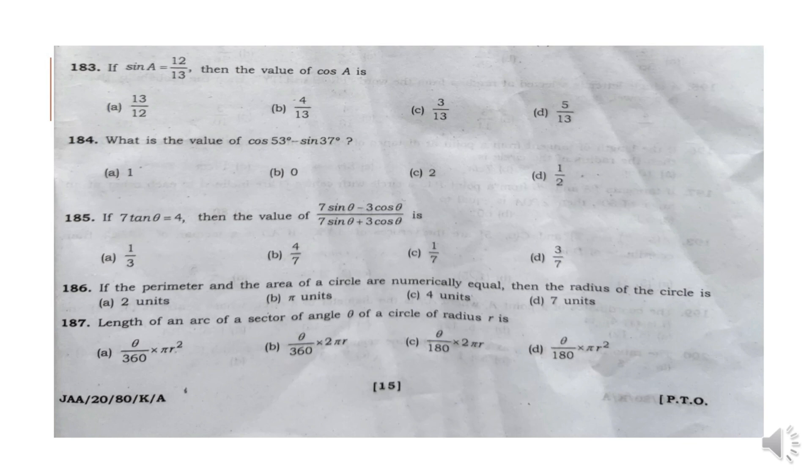Question 183: If sin A is equal to 12 by 13 then the value of cos A is 5 by 13. Option D.